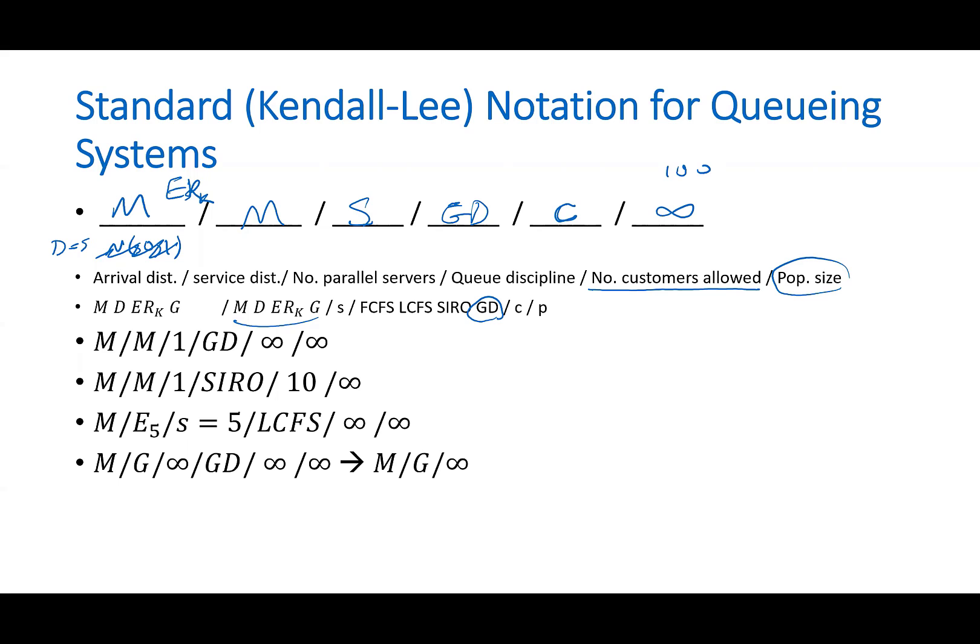And usually, when these three characters are general discipline and infinite capacity, infinite population size, whenever that's the case, we just drop them. So instead of writing all six characters, we only write the first three.